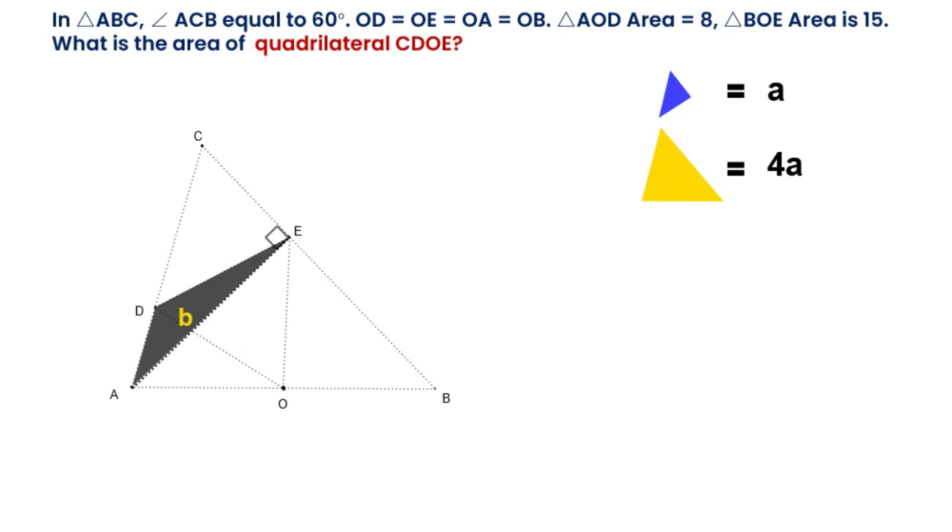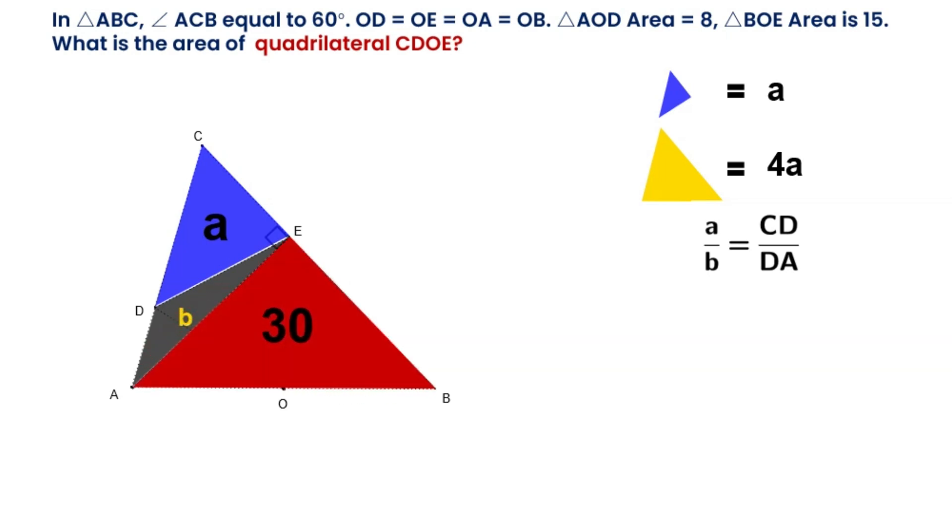Then, let's say that the area of triangular AED is equal to B. We can get A over B equals CD over DA. O is the midpoint of side AB of triangle AEB, so the area of AEB is twice that of triangle OEB. We can get B equals 3A minus 30.